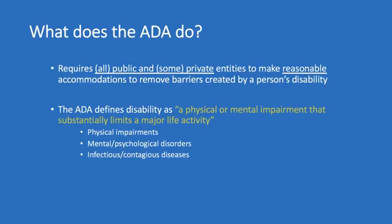So what does the ADA do? It requires all public KNR organizations and some private entities to make reasonable accommodations to remove barriers created by a person's disability. This law is the most comprehensive law regarding disability in our history, because its coverage not only applies to public organizations but also private organizations.